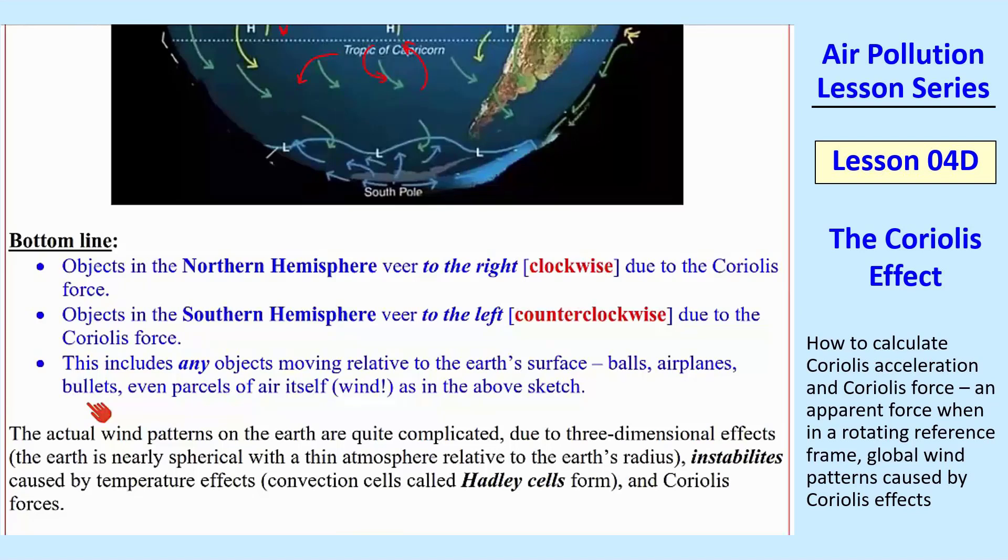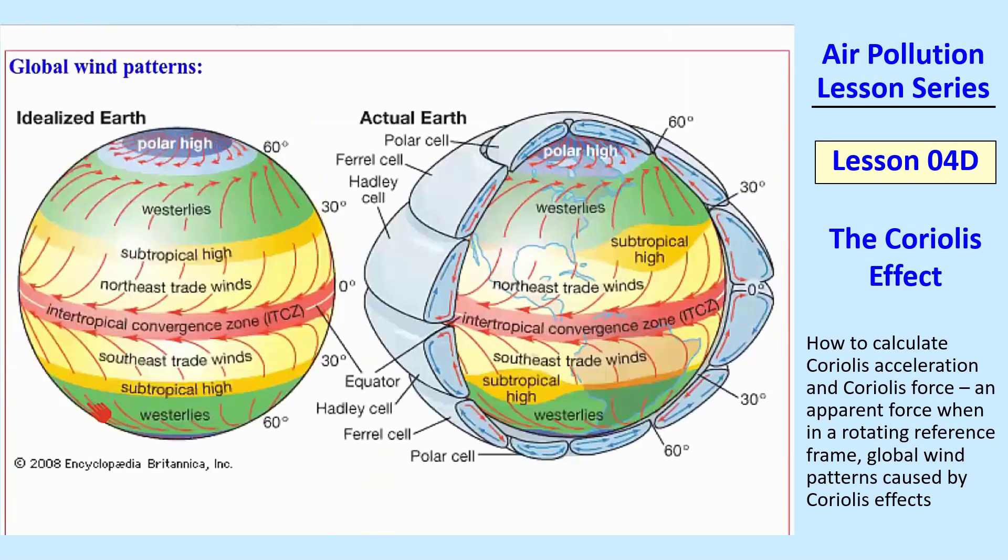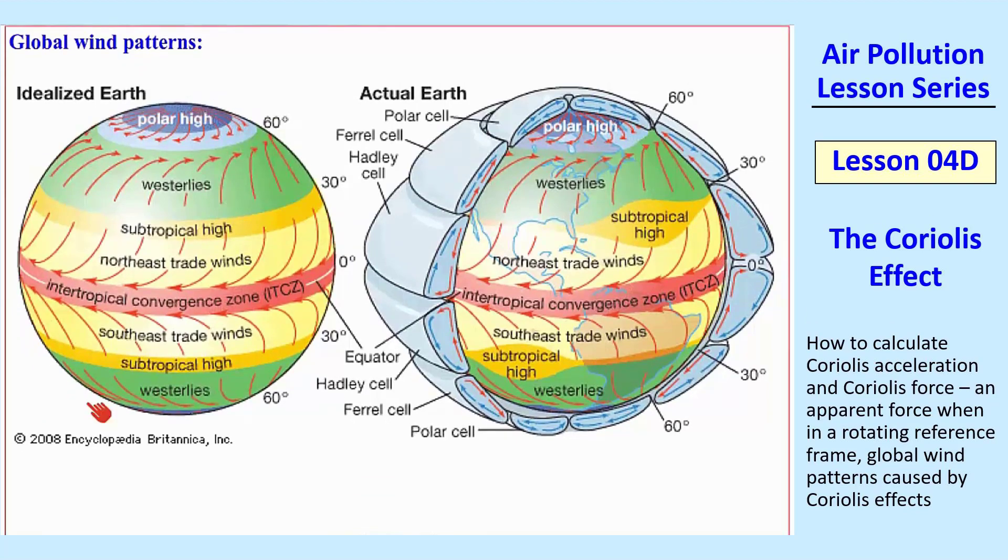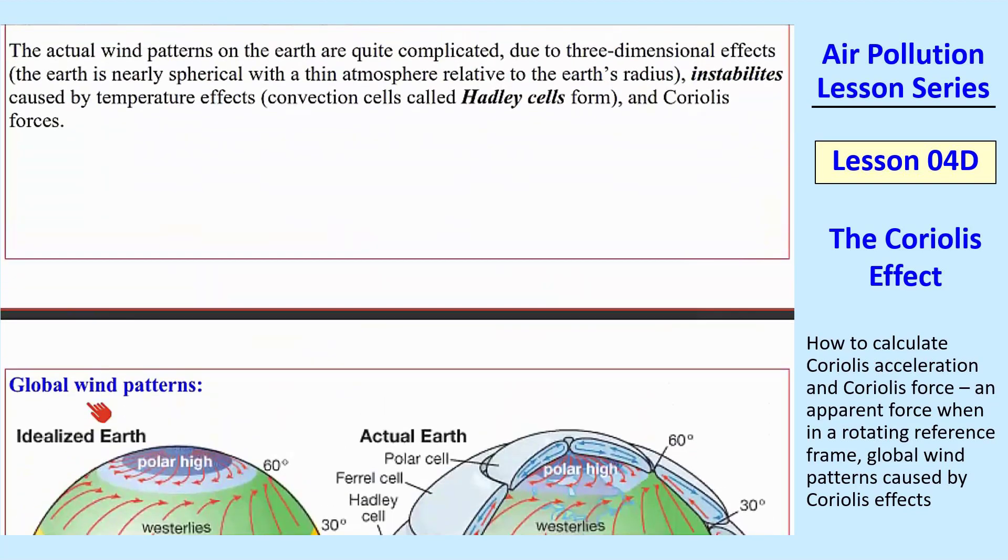And so in the northern hemisphere, they're shooting at a target. If they line up their sights, they'll always hit to the right of the target. So they need to adjust for that because of Coriolis. Well, this leads to some significant global wind patterns, as I said, and I'm not going to get into all the details, but these are called Hadley cells.